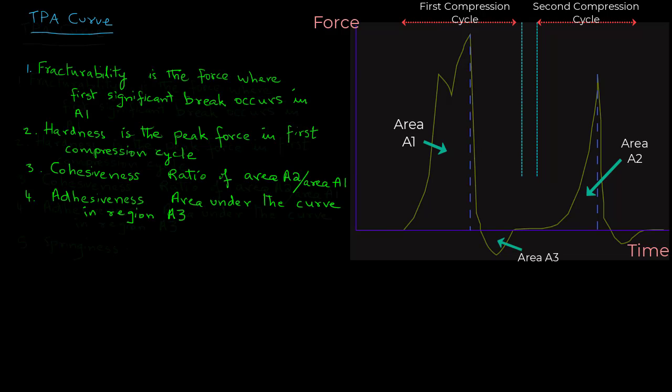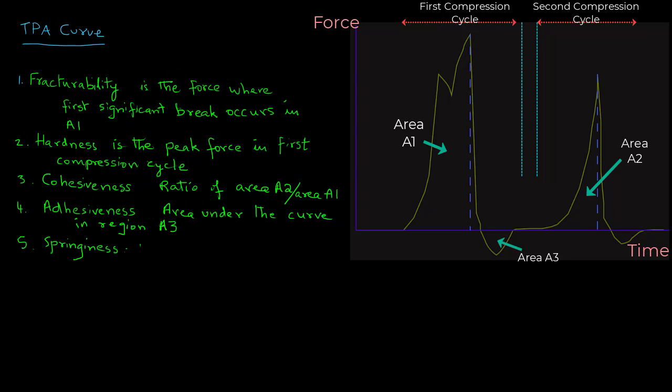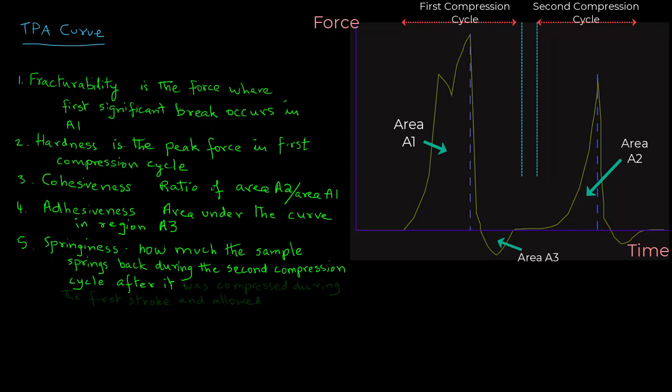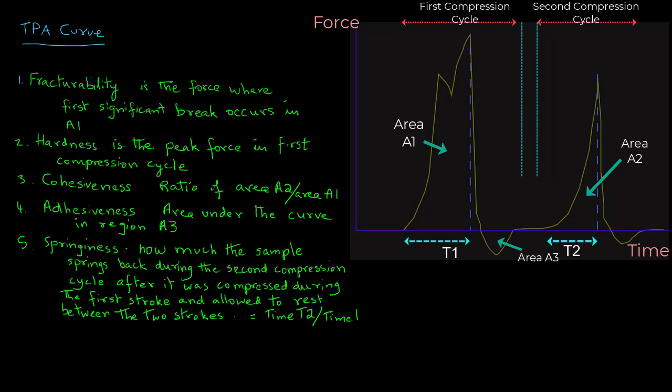Another term we can obtain is springiness, which allows us to determine how much the sample springs back during the second compression cycle after allowing it to rest after the first cycle. It's calculated as a ratio or a percentage as elapsed time T2 divided by T1. Incidentally, this value will be the same as the sample height in the second stroke as a percentage of the original height.